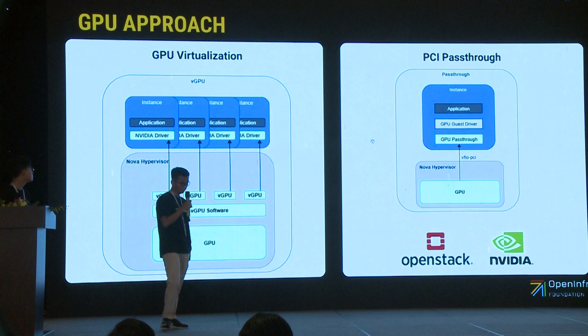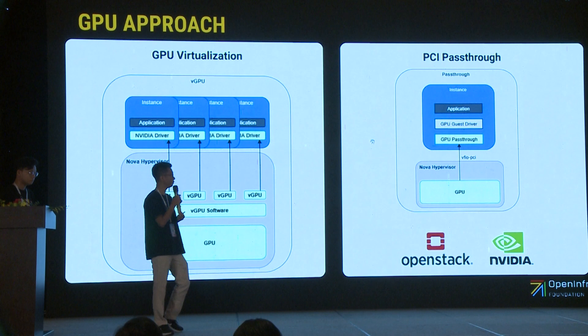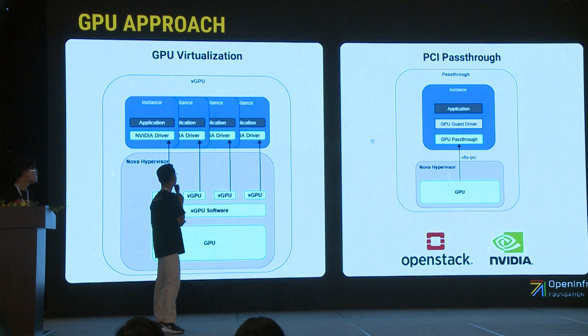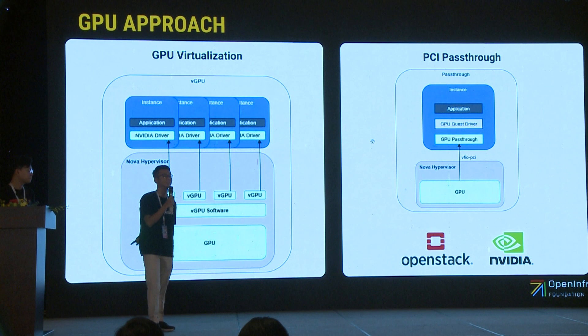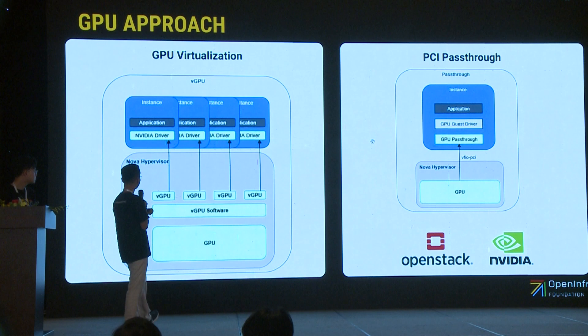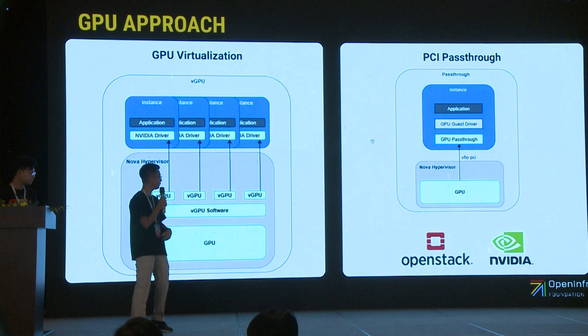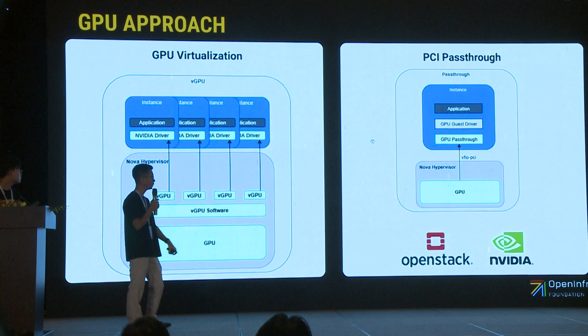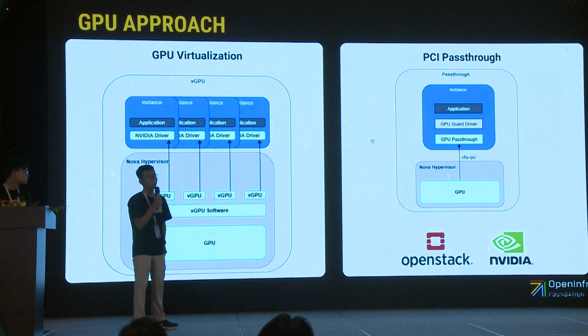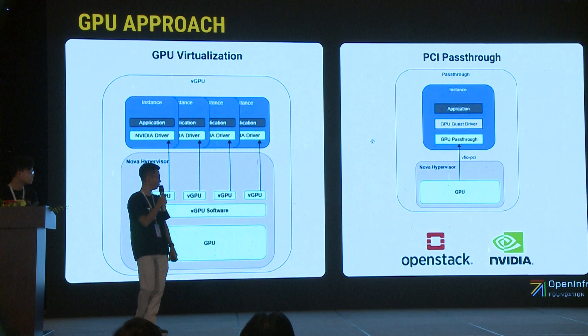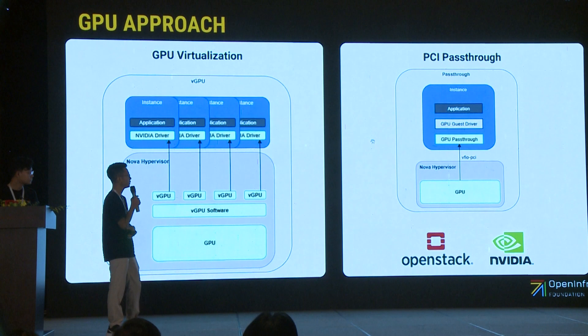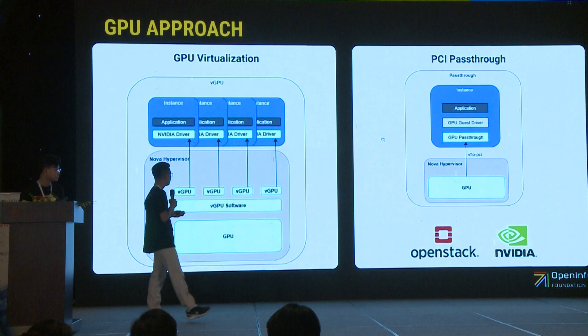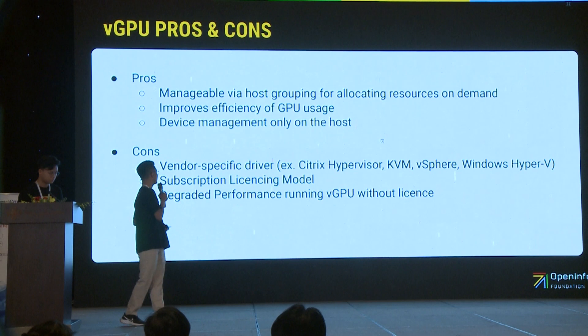This is the GPU approach. If you want to use GPU in OpenStack, you have to choose an approach. The first one is GPU virtualization, or vGPU — virtual GPU. In one GPU, you can install virtual GPU software and assign virtual GPUs to instances. The other approach is GPU pass-through, also called GPU PT or PCI pass-through. One GPU on a Nova hypervisor compute in OpenStack can only be used for one instance — it's exclusive.